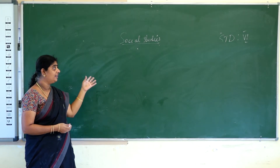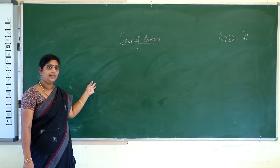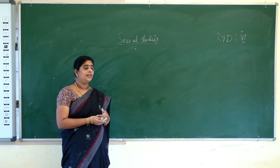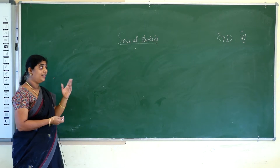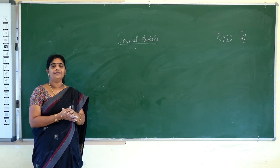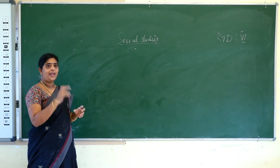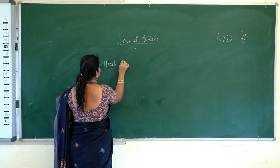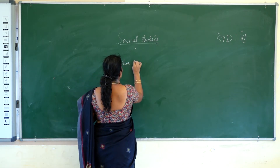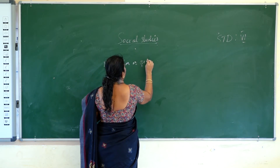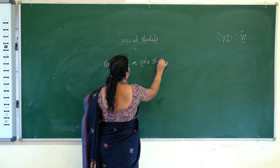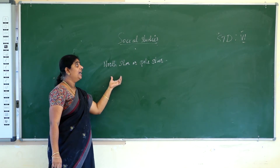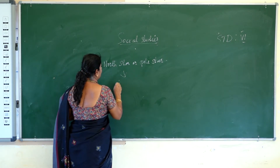This helps navigators to find direction during night time. In olden days, navigators and travelers would find and determine direction using the position of the stars. Mainly, we have one star that is the North Star, also called the Pole Star. The North Star or Pole Star indicates the direction of the North.